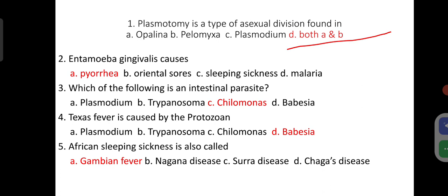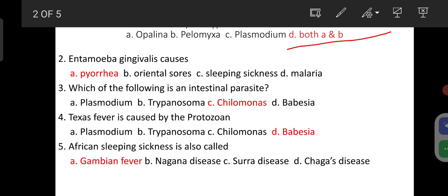Entamoeba gingivalis causes pyoria. It is a gum disorder. Pyoria is a gum disorder that is caused by Entamoeba gingivalis.